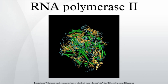RNA polymerase II holoenzyme is a form of eukaryotic RNA polymerase II that is recruited to the promoters of protein coding genes in living cells. It consists of RNA polymerase II, a subset of general transcription factors, and regulatory proteins known as SRB proteins. Part of the assembly of the holoenzyme is referred to as the preinitiation complex, because its assembly takes place on the gene promoter before the initiation of transcription.